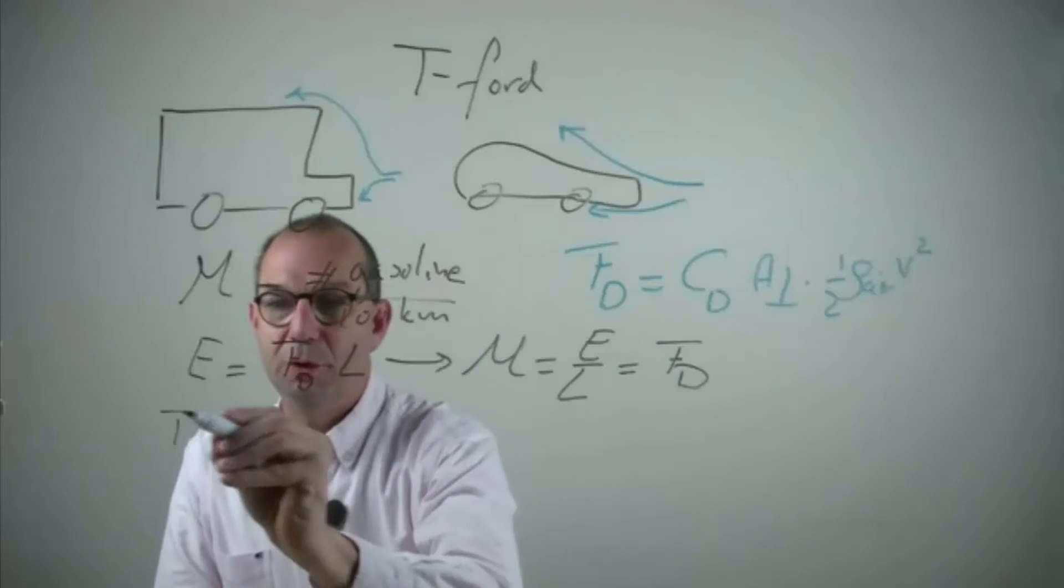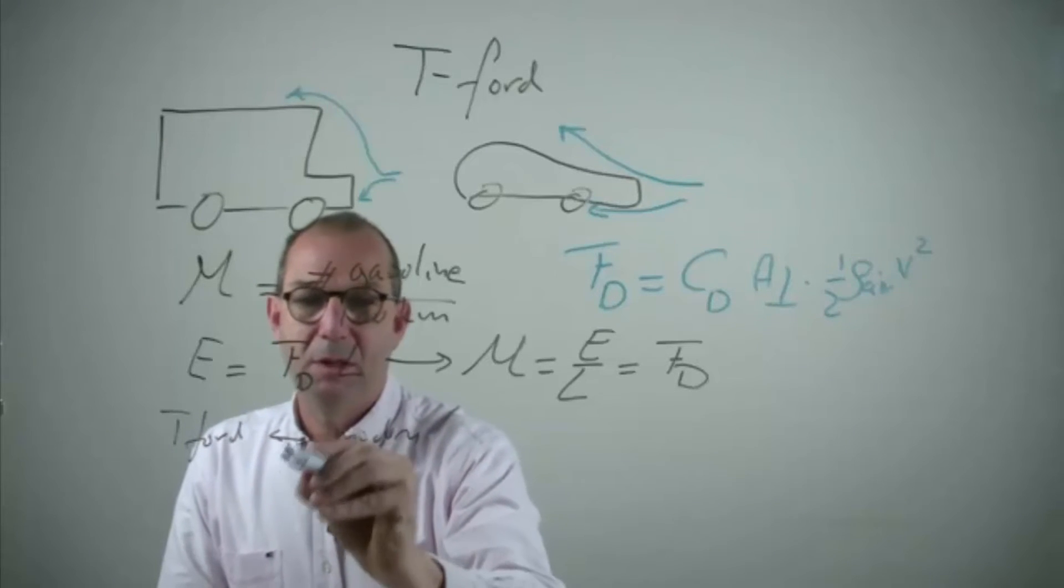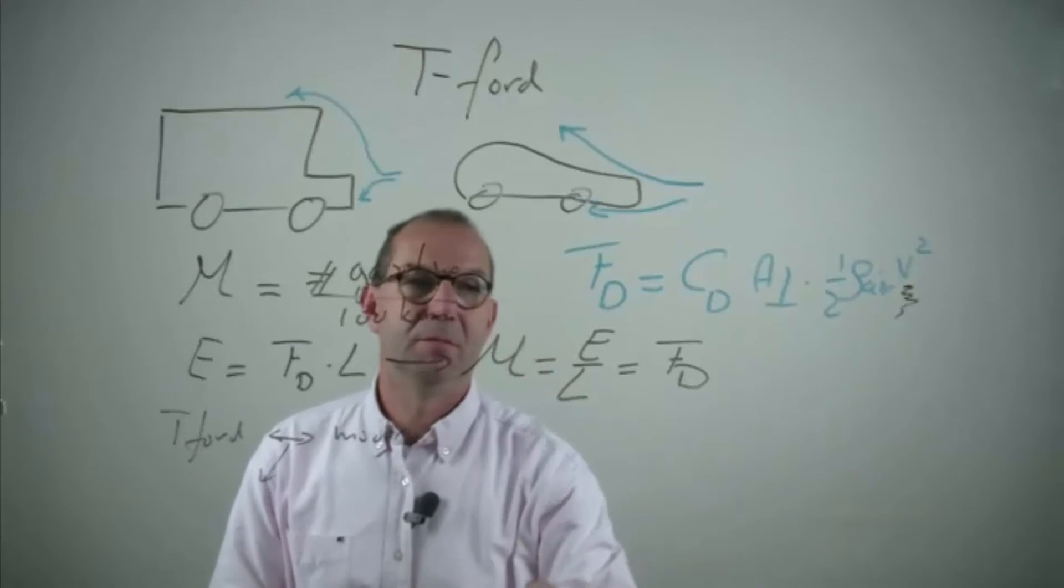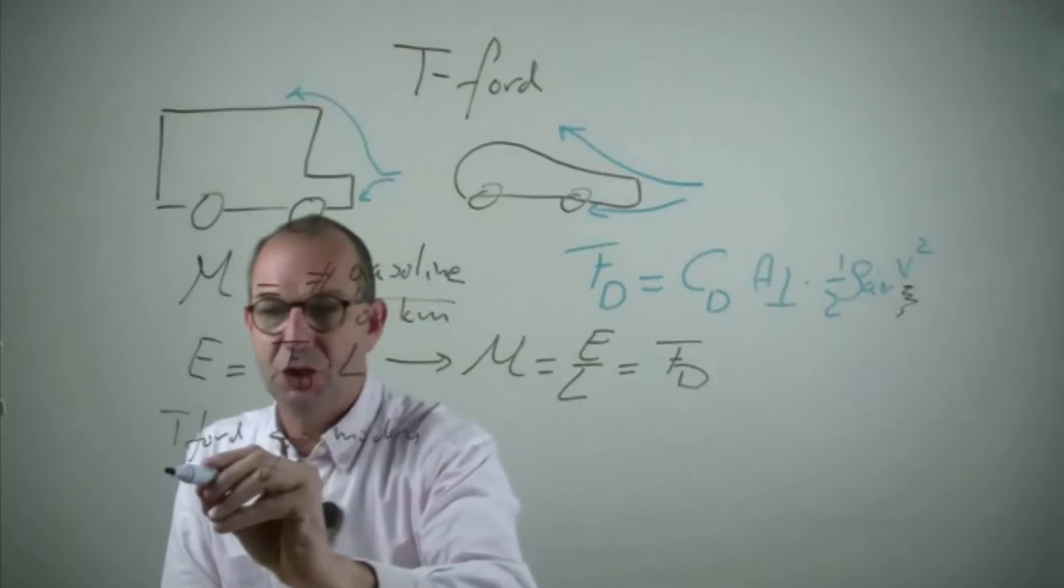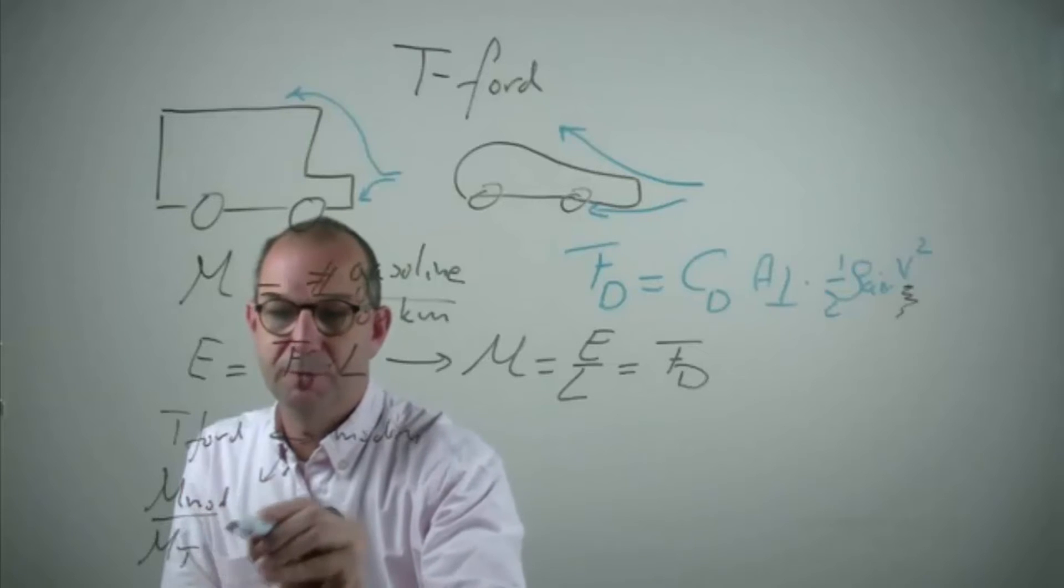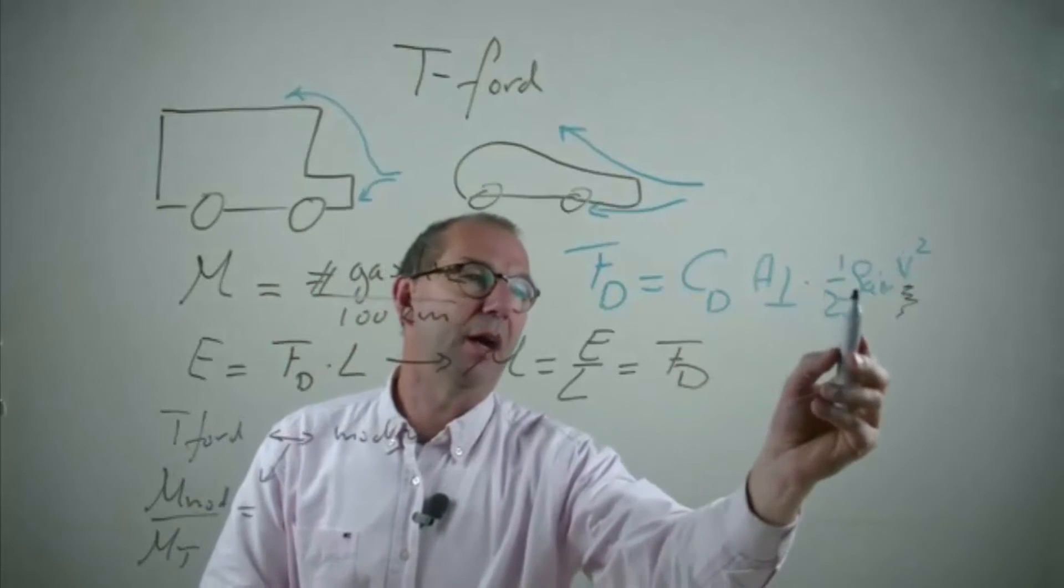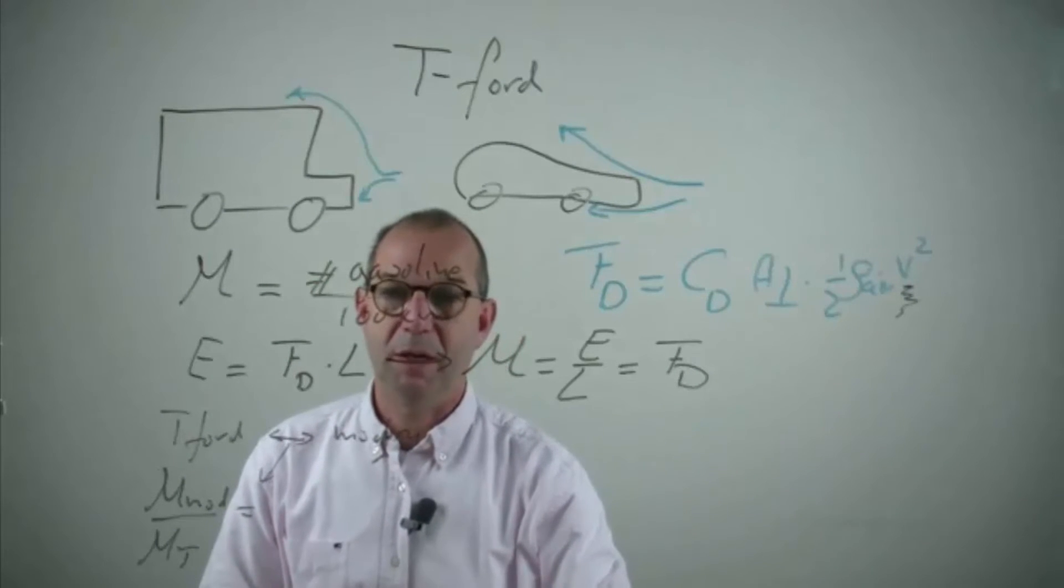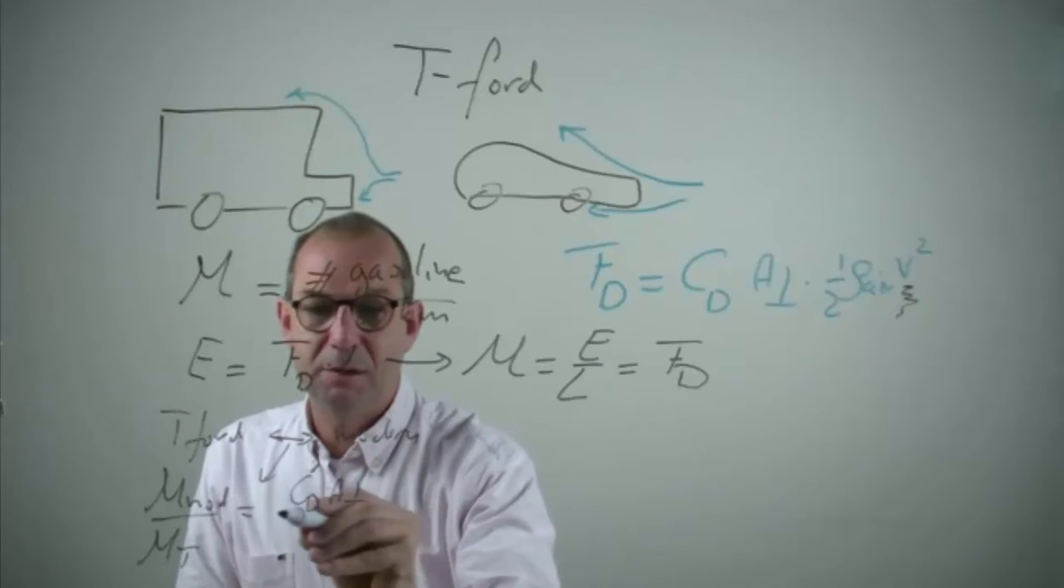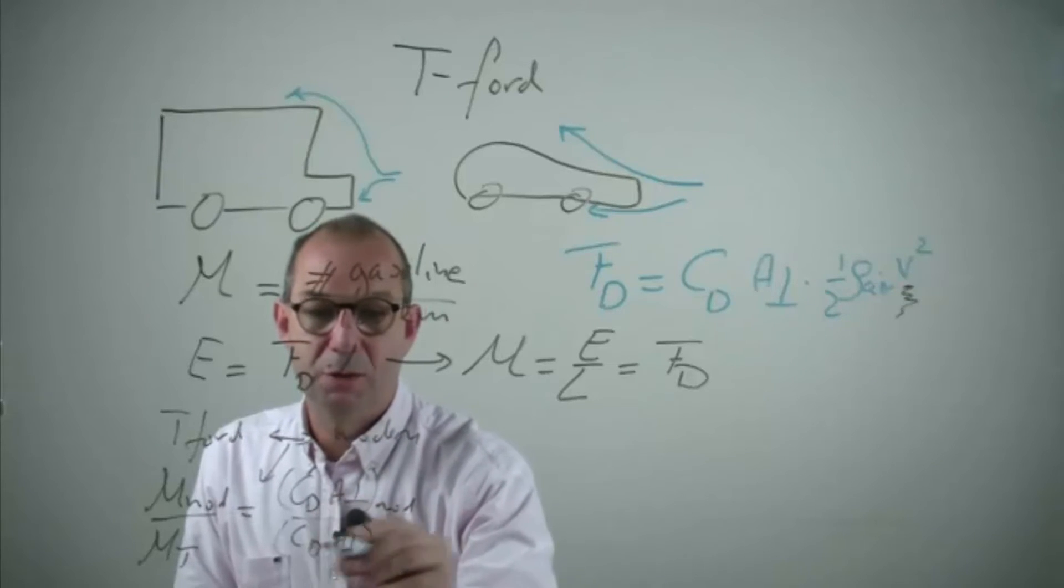If we now have the T Ford and compare that to a modern car and we let them drive at the same velocity, we see that the ratio of the mileage of a modern car over the mileage of the T Ford equals the drag coefficient times the frontal area, as half rho v squared is the same for both. Thus we have CD A perpendicular for the modern car over CD A perpendicular of the T Ford.